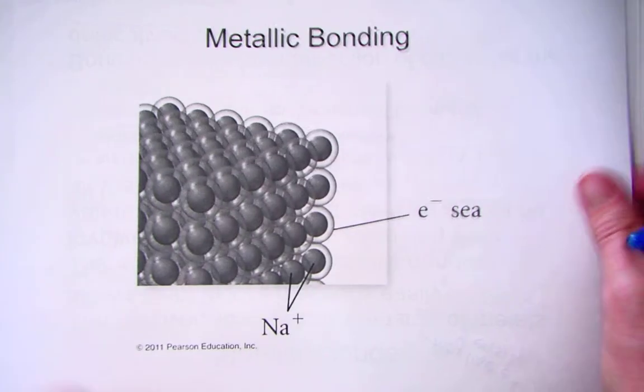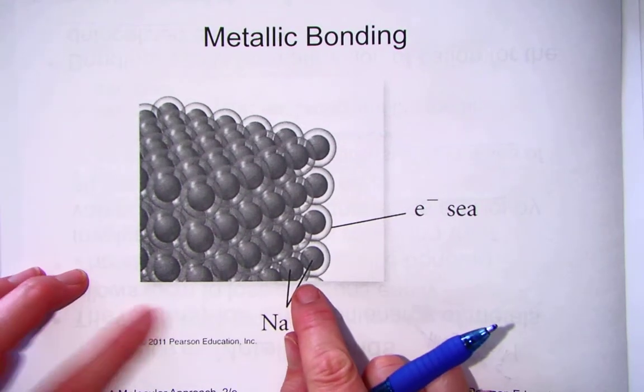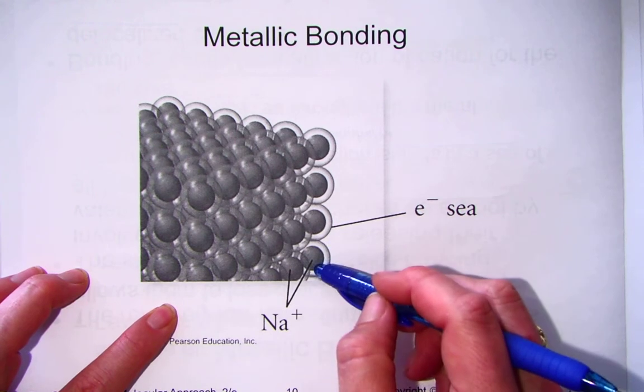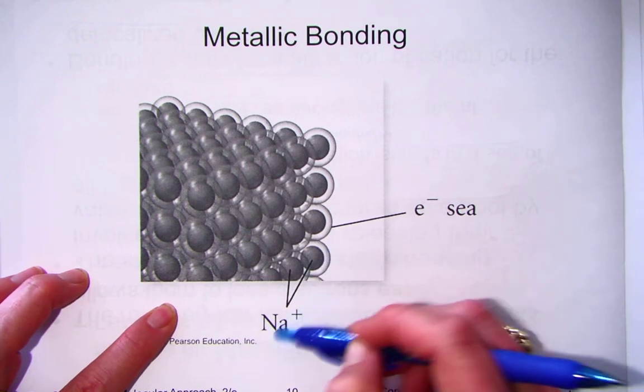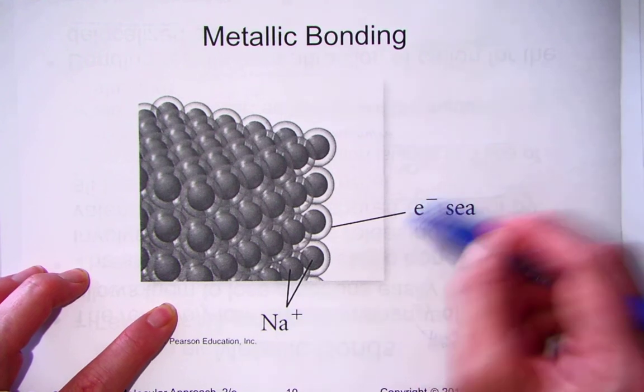In a metallic bond, we saw this earlier, just as a closer up picture, where the sodium atom, when it loses its electron, forms the ion. Na becomes Na+ with the loss of an electron.